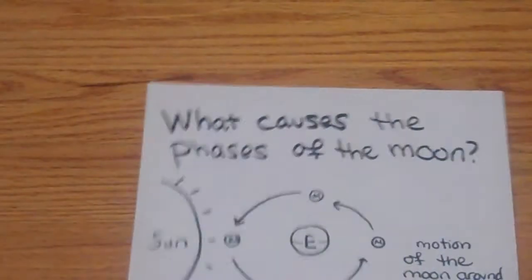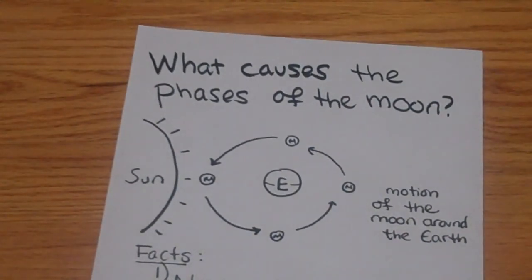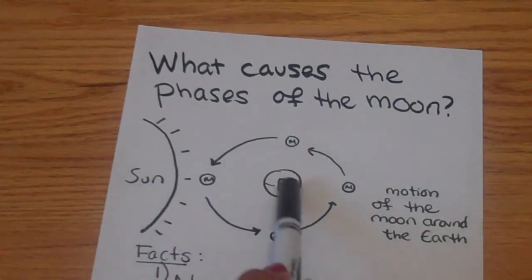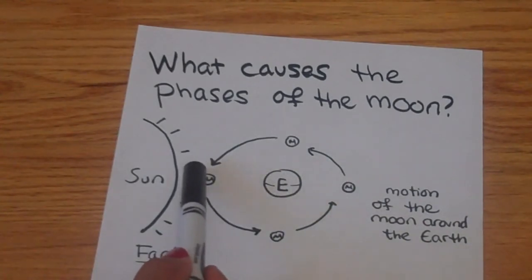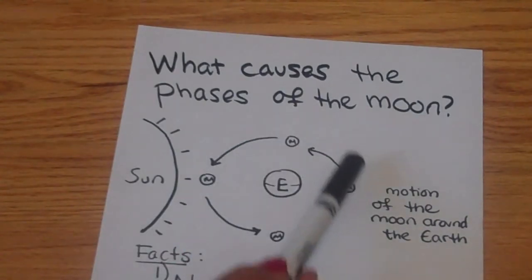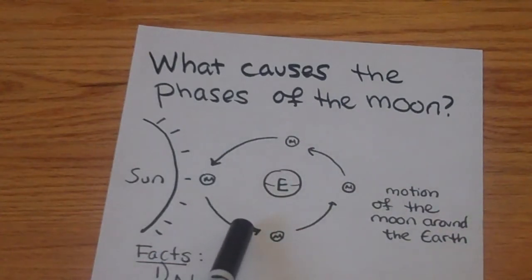Our first sheet says, what causes the phases of the moon? Here's an illustration that I made. You can see here there's the sun, the earth right here—I labeled it E—and I put an equator around it, and then I drew four moons, but really it's just one at a time. I drew the circle going counterclockwise because that's the way the moon goes around the earth.